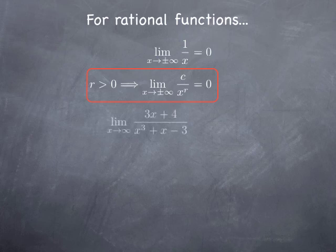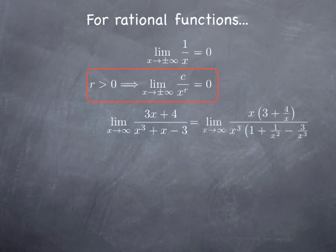With this in mind, let's see what that means for limits of more general rational functions. For instance, consider (3x + 4) / (x³ + x - 3) when x goes to infinity. The standard procedure is to factor the highest power of x at the top and at the bottom. At the top, we factor x, giving x times (3 + 4/x). At the bottom, we factor x³, giving x³ times (1 + 1/x² - 3/x³).